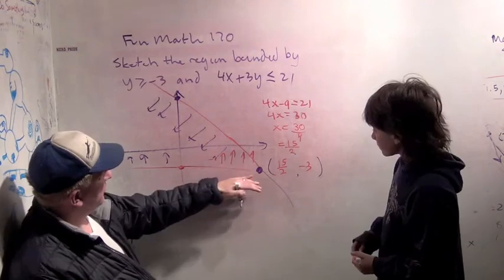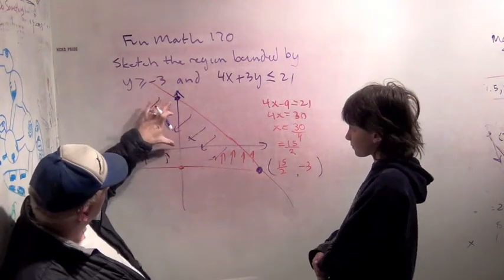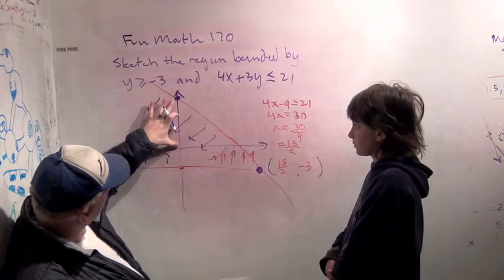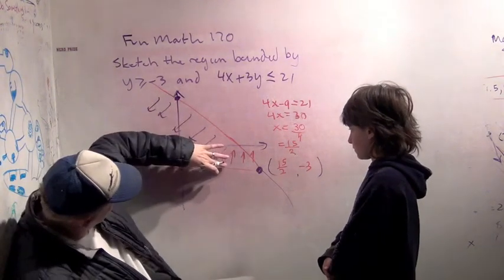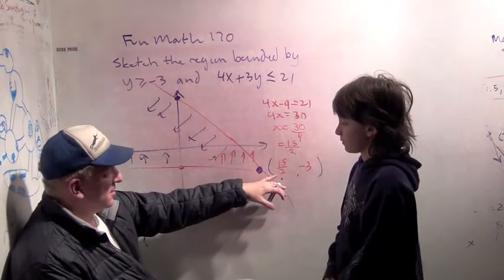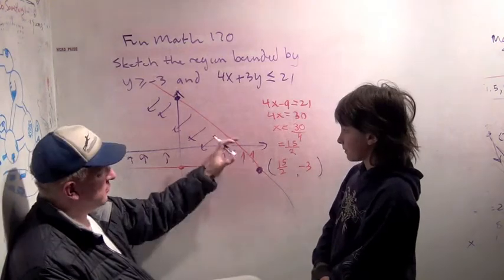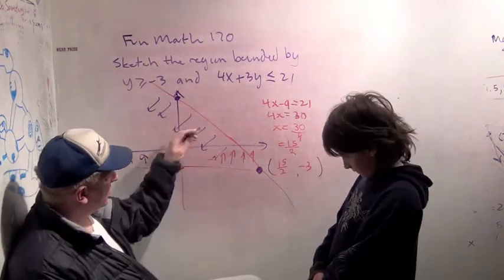Great. So 15 halves is about, it's a little bit bigger than 7. Now, we said this height here was 7. And so, well, so we didn't draw it quite to scale. But at least, you know, at least we didn't get like this should be 100 or like -20 or something. So it seems roughly right. So there's our region.